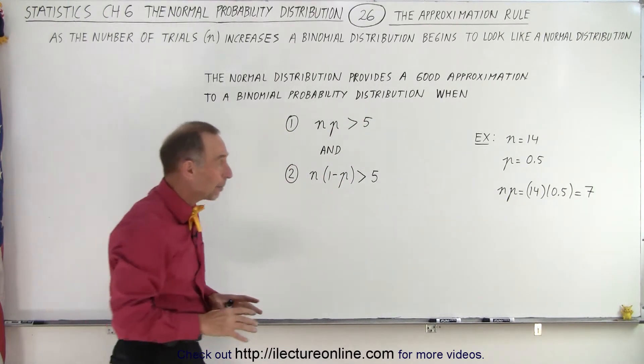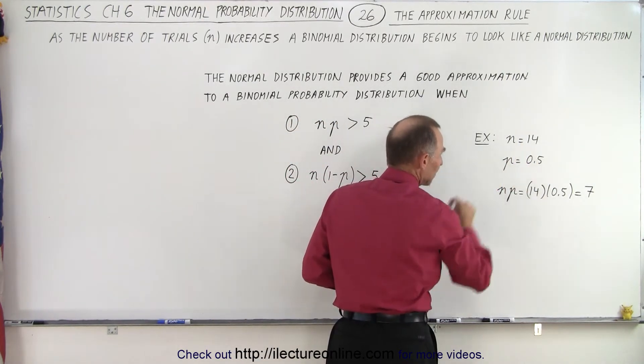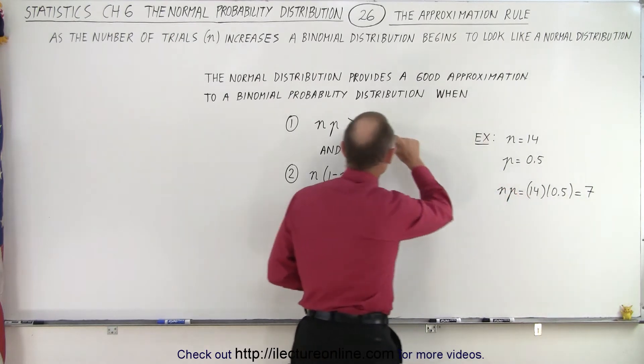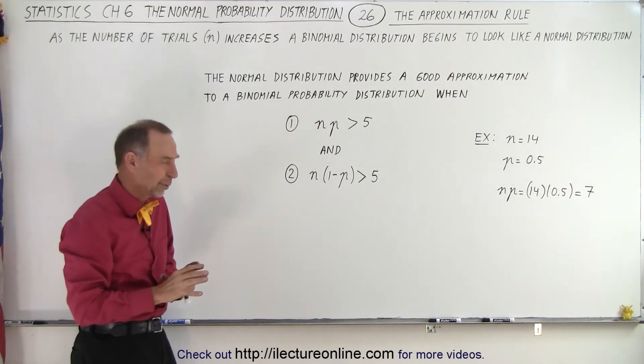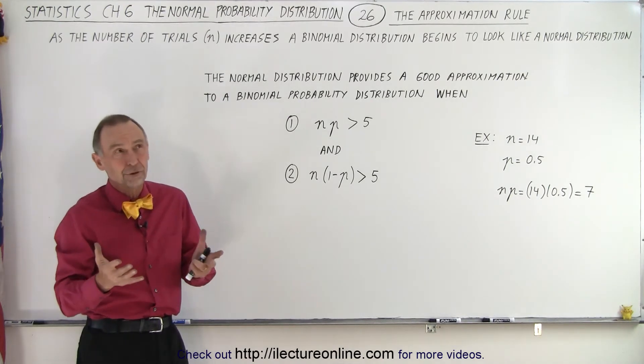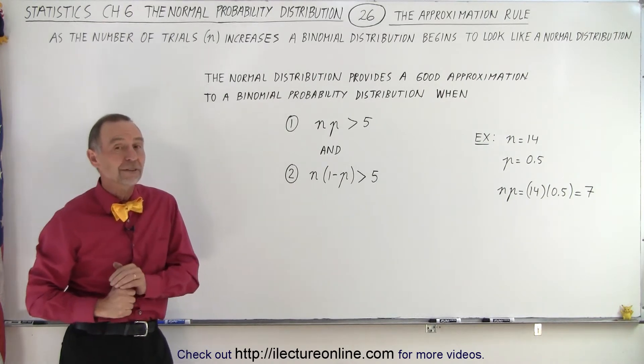So in the previous example, we had n equals 14, the probability of success being 0.5. So the product ended up being 7, which is greater than 5, and you saw how close the two results were. It was 6.11% versus 6.06%. They were really close, even when that product was 7.